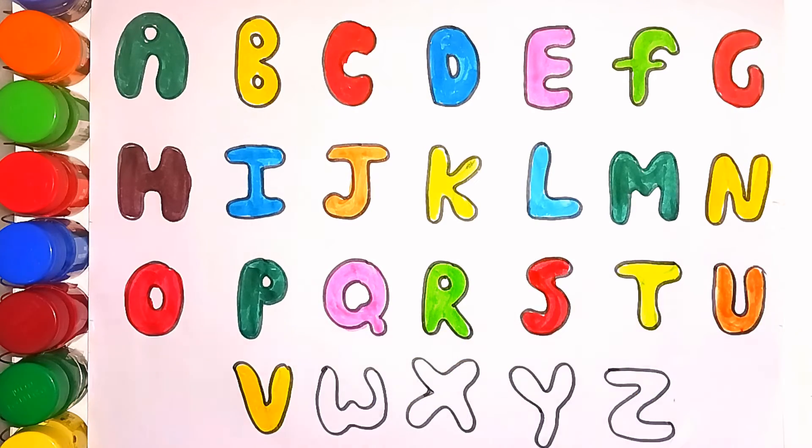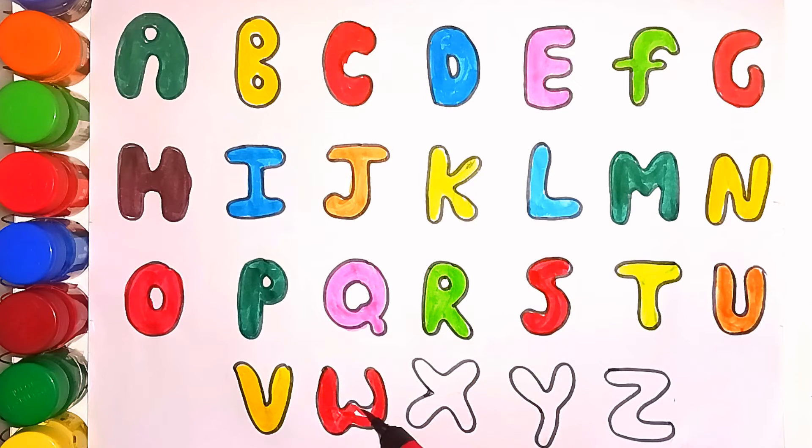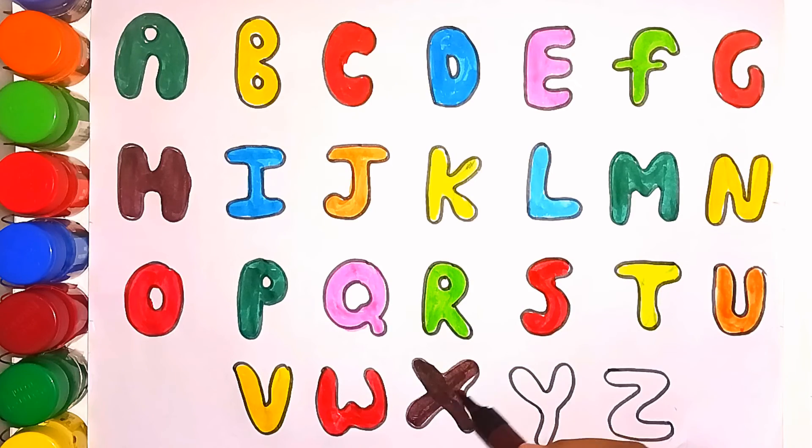Yellow color V. V for van. Red color W. W for watch. Brown color X. X for Xmas tree.